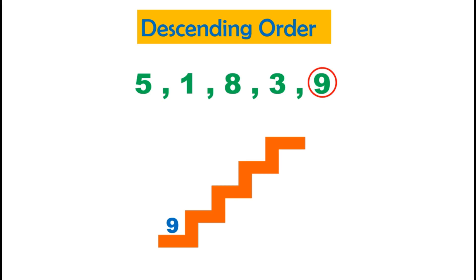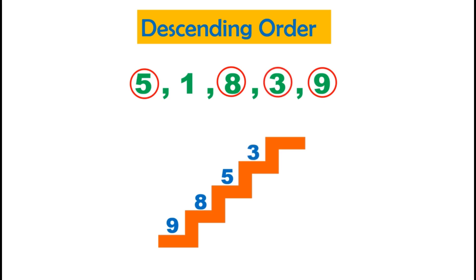The next biggest is 8 — let's circle it. Amongst 5, 1, and 3, the biggest is 5 — let's circle it. Now between 1 and 3, the bigger number is 3. We are only left with number 1.